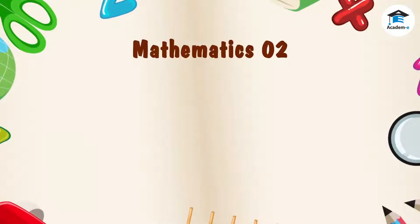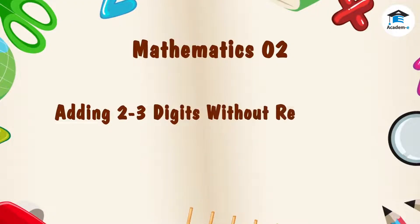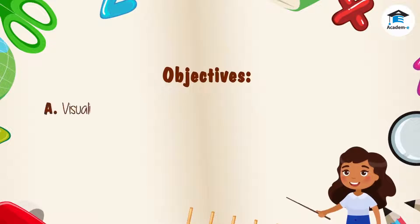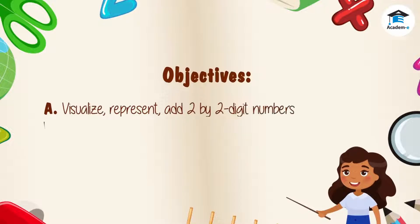Mathematics 2: adding 2 to 3 digits without regrouping. Objectives: at the end of the lesson you should be able to visualize, represent, and add two-digit by two-digit numbers without regrouping.